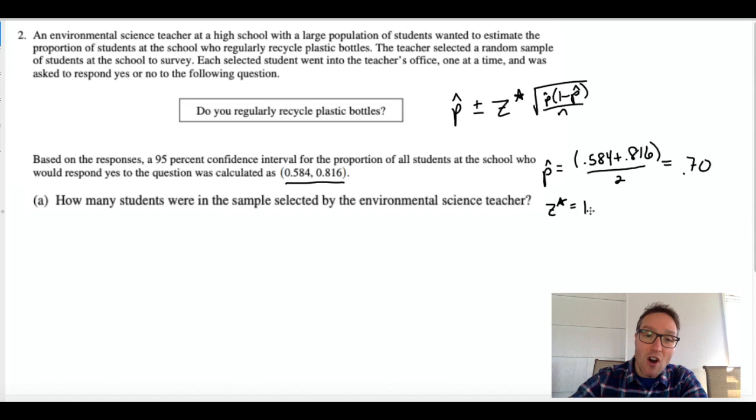The z-star for 95% confidence is 1.96. That's one that I have memorized. If you don't have that memorized or if it's a different percent confidence level like 96% let's say, you'd have to find the area under the normal distribution or you'd have to find the z-scores that capture the middle 96% and you could do that with an inv norm.